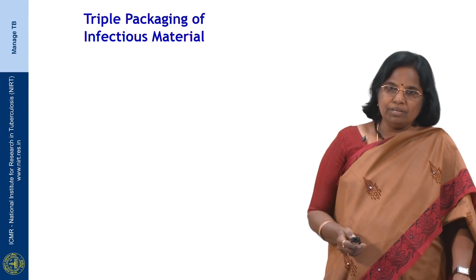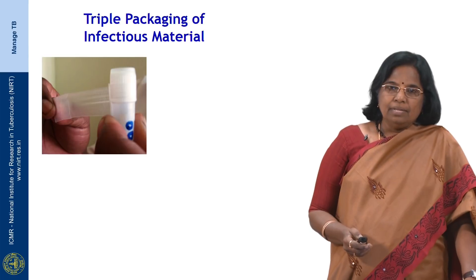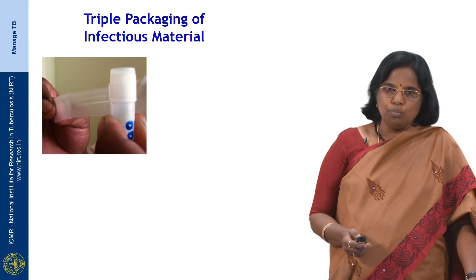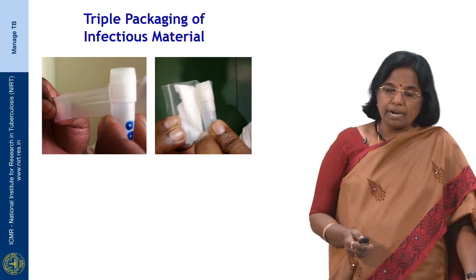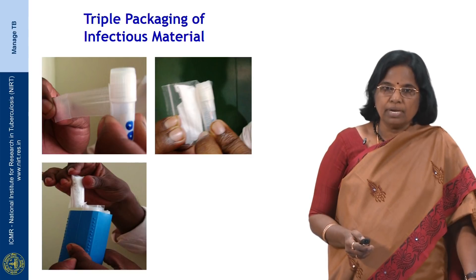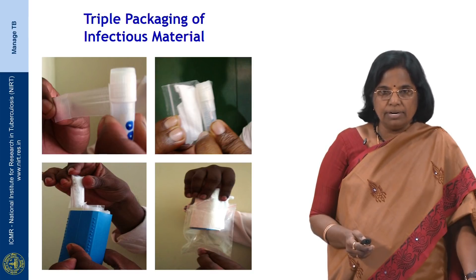We will now look at the triple packaging system for transporting infectious material. The material has to be collected in a screw-capped tube or container, which is the primary container. After ensuring the cap is tightly closed, it should be sealed using paraffin film, then wrapped with absorbent material like tissue paper and placed in a ziplock cover. Several such ziplock covers can be placed in a second container, and the request forms should be placed separately in a ziplock cover.